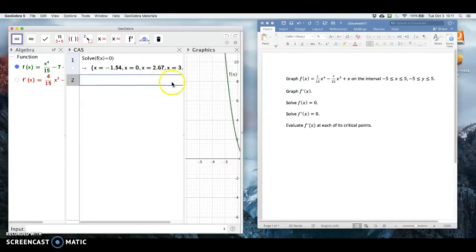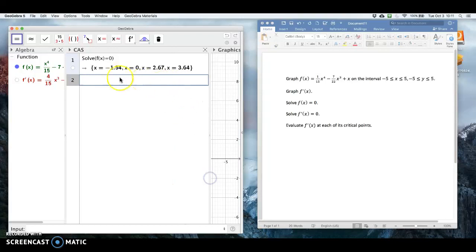then it gives me all of my solutions. So I get minus 1.540, 2.67, and 3.64. So those are all my solutions for the function f of x equals zero.